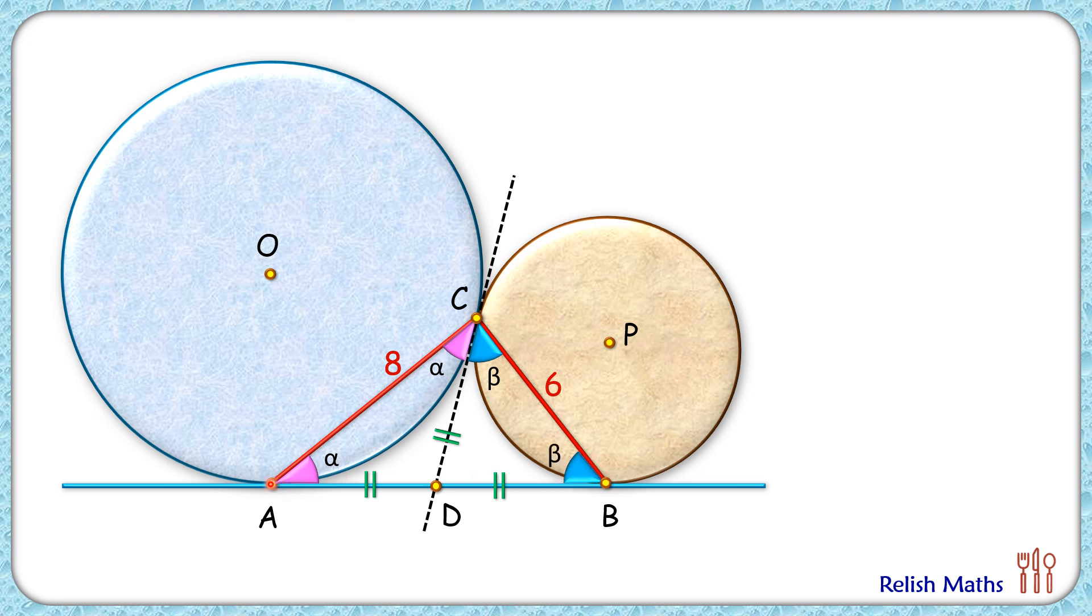Now in triangle ABC, if you see the sum of all the angles, all the angles are alpha, beta, beta, alpha, or 2 alpha plus 2 beta that's 180 degrees. Dividing by 2 we get alpha plus beta as 90 degrees. Now here this angle is alpha plus beta, so angle C is actually 90 degrees.